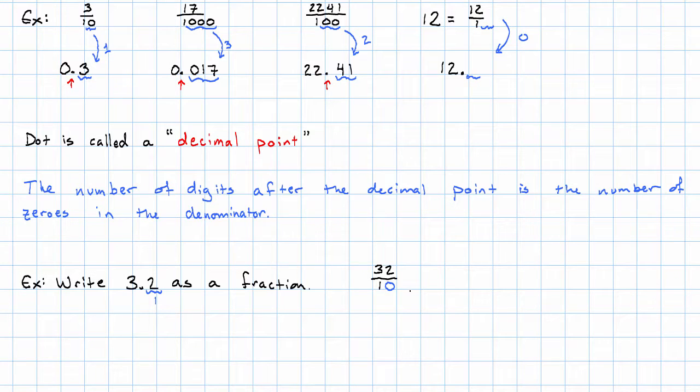So 3.2 is 32 tenths. Noticing that we can divide both the numerator and denominator by two, we get 16 fifths.